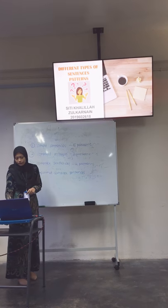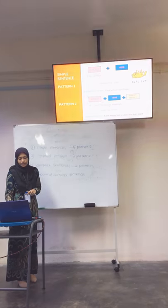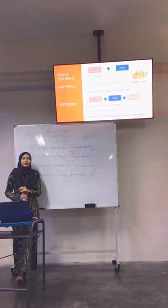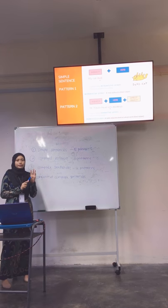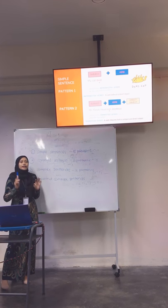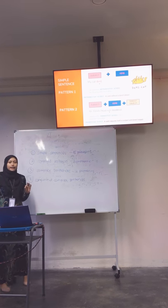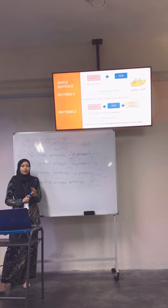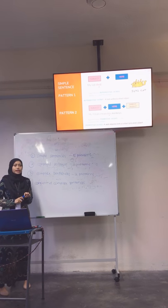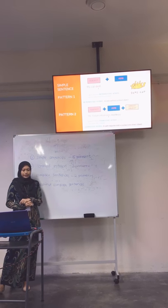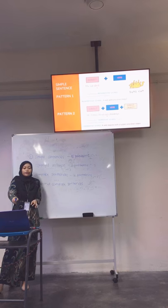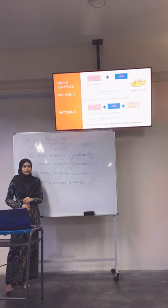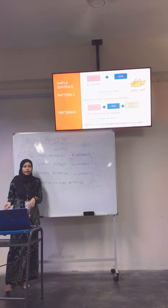Let's proceed to the first type of sentence, which is simple sentence. For pattern 1, we have subject plus verb. For this pattern, it can be used with intransitive verbs only, which is the verb without a direct object. For the example, 'My cat is done' — so there's no direct object.